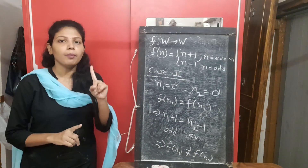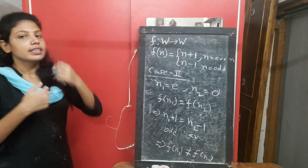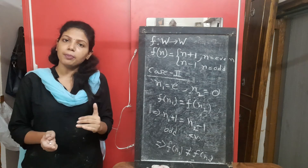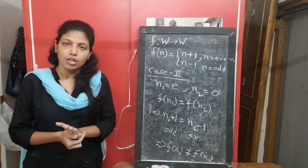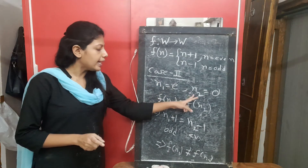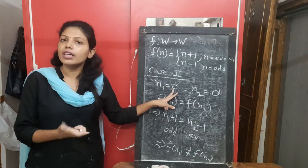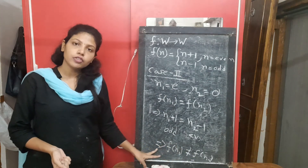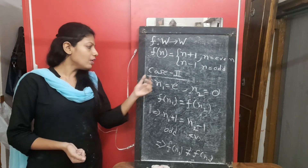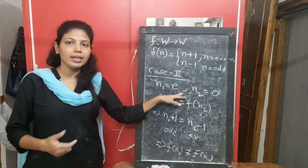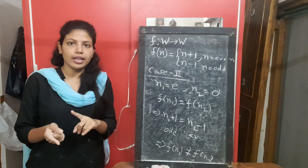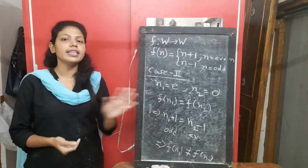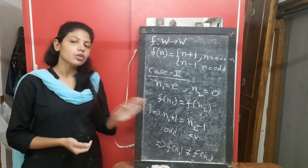There are two ways to prove 1-1: Method 1 — assume f(x1) = f(x2) and prove x1 = x2. Method 2 — assume x1 ≠ x2 and prove f(x1) ≠ f(x2). Here in Case 3 I used Method 2: n1 and n2 are different (one even, one odd), and I proved their images are different. So all three cases confirm f is 1-1. Therefore, f is a 1-1 function.